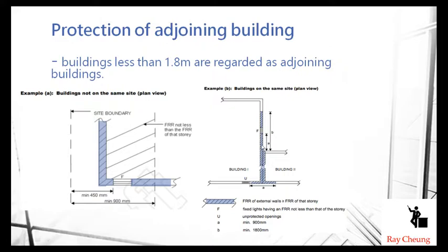You can see the blue highlighted requirement — at least 900 millimeters. From the adjoining building, if you have a fixed light opening, it should also have protection with the so-called FRR — fire-resistance rating. The protection should not be less than the specified value. Within 1.8 meters, the wall must be protected to prevent fire from spreading to another building.